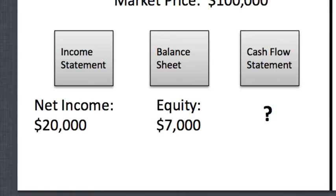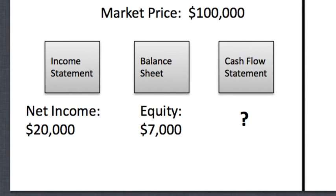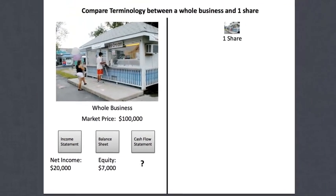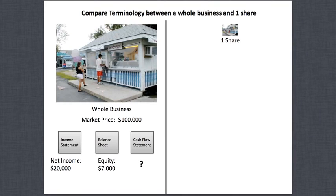The balance sheet represents the equity. If Nancy ended her business today, fired her employee, sold everything, and paid off all debts, what would be left is $7,000 — that's the equity. The margin of safety is the difference between equity and market price. If you buy the business for $100,000 and have to shut it down the next day, you'd only recover $7,000, so the margin of safety is very little.